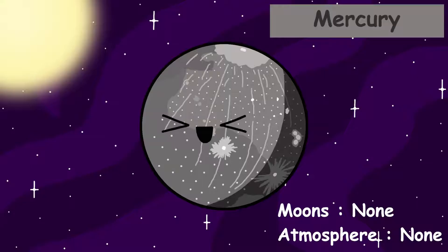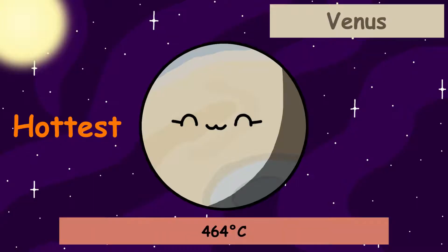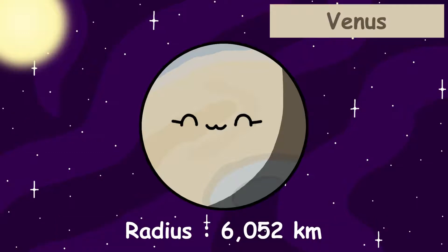It doesn't have an atmosphere or any moons. Next up is Venus, the second planet from the sun and also the hottest, with a surface temperature of 464 degrees Celsius. Venus has a radius of 6,052 kilometers.